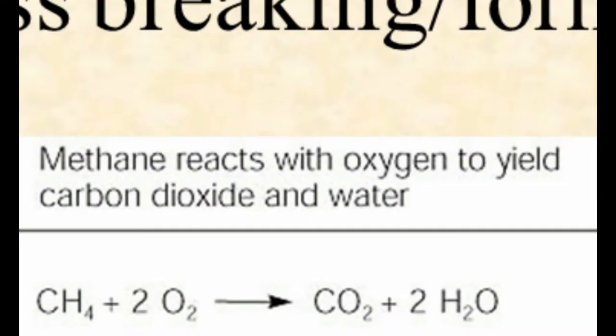So if the sentence says 'reacts with,' that's the plus sign. If it says 'to yield,' 'to form,' or 'to produce,' that's the arrow. On the right side of the arrow, instead of 'reacts with,' the sentence will just say 'and.' That's it.